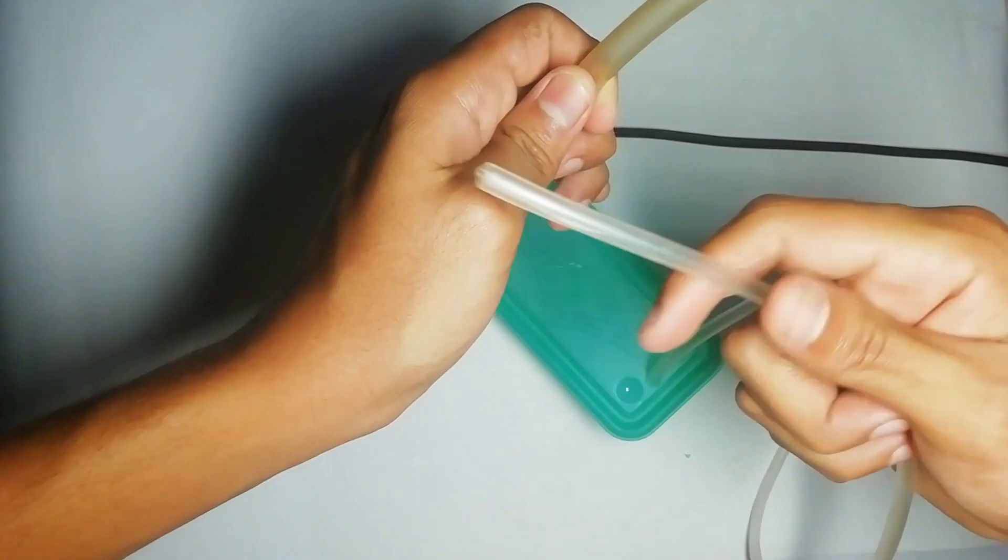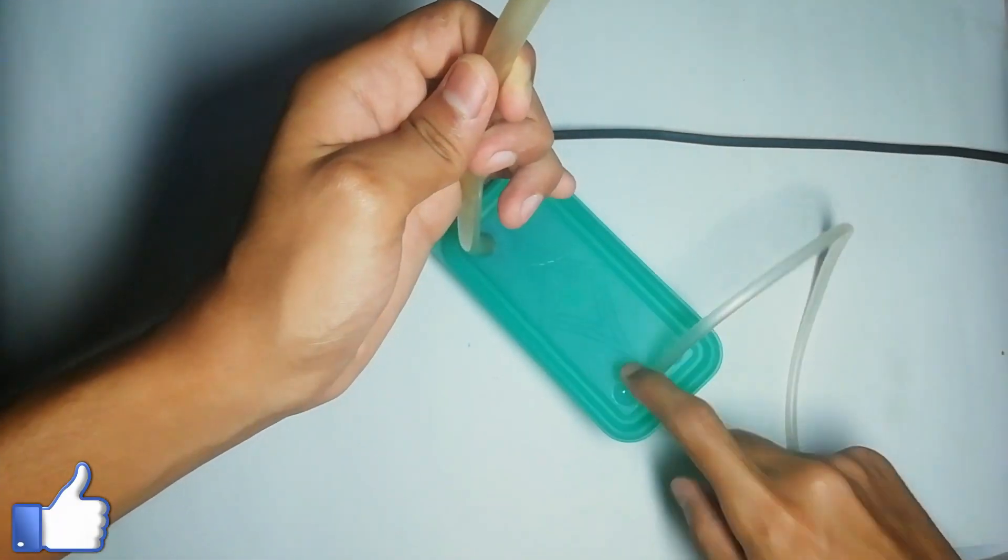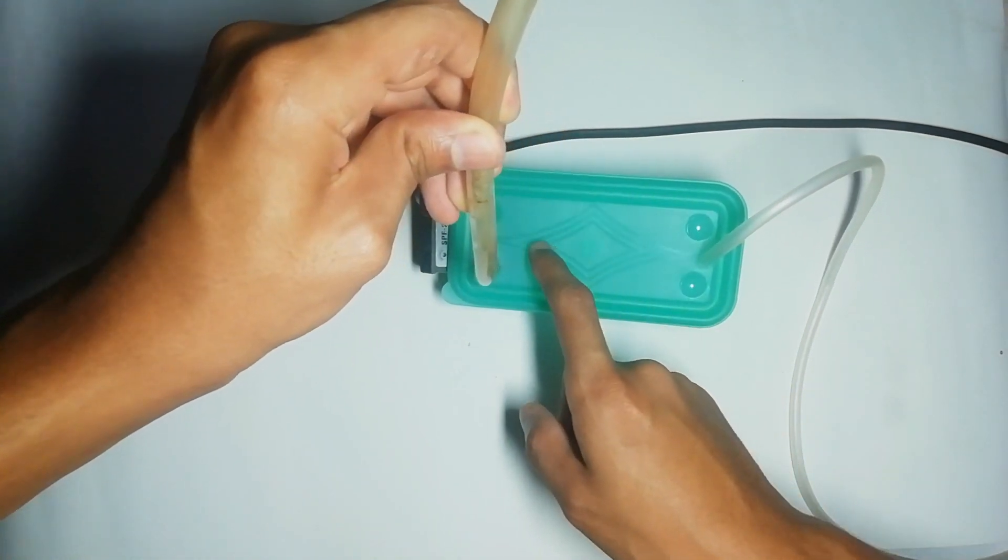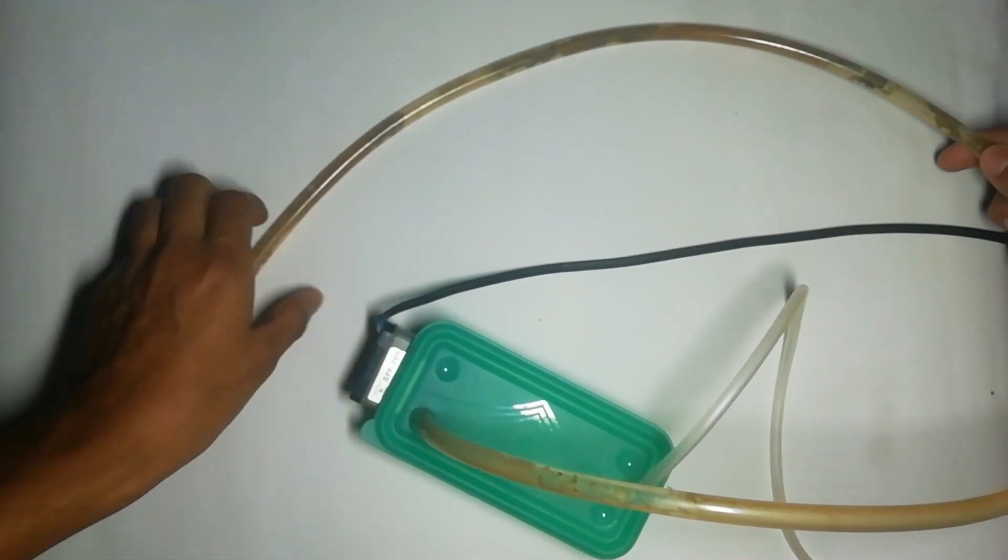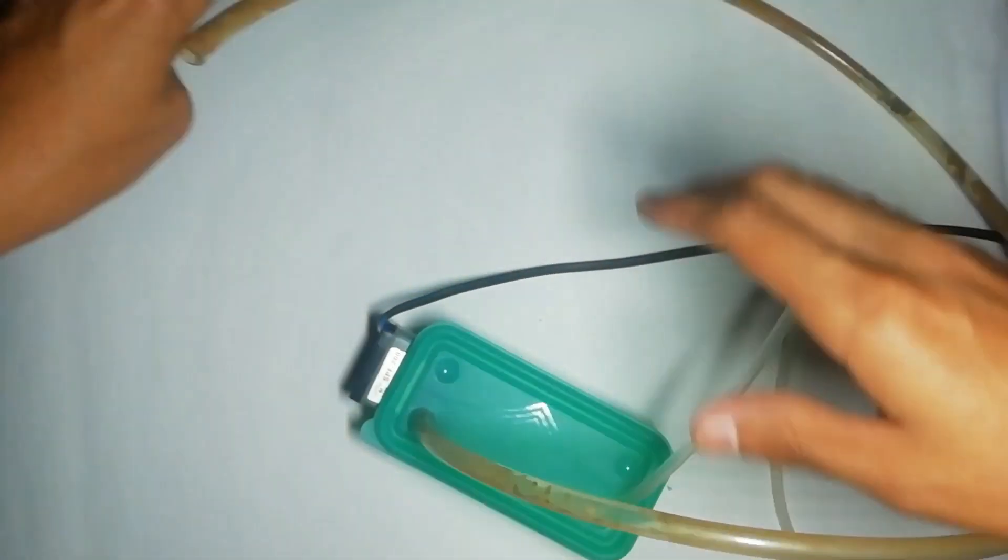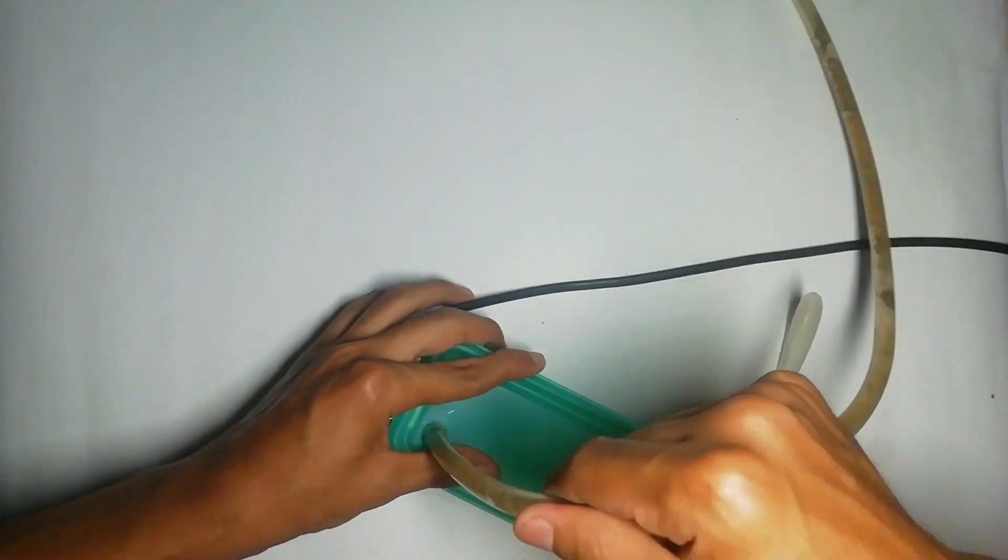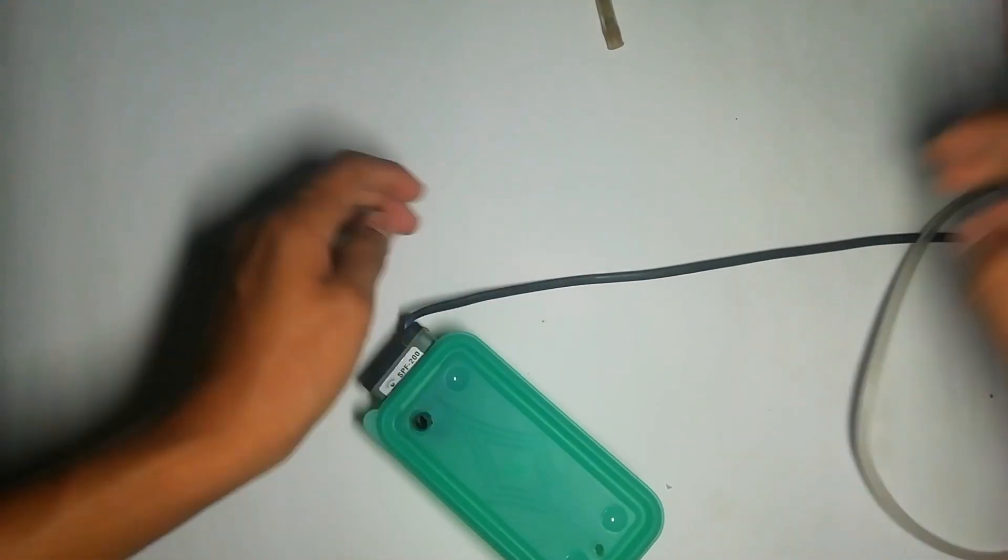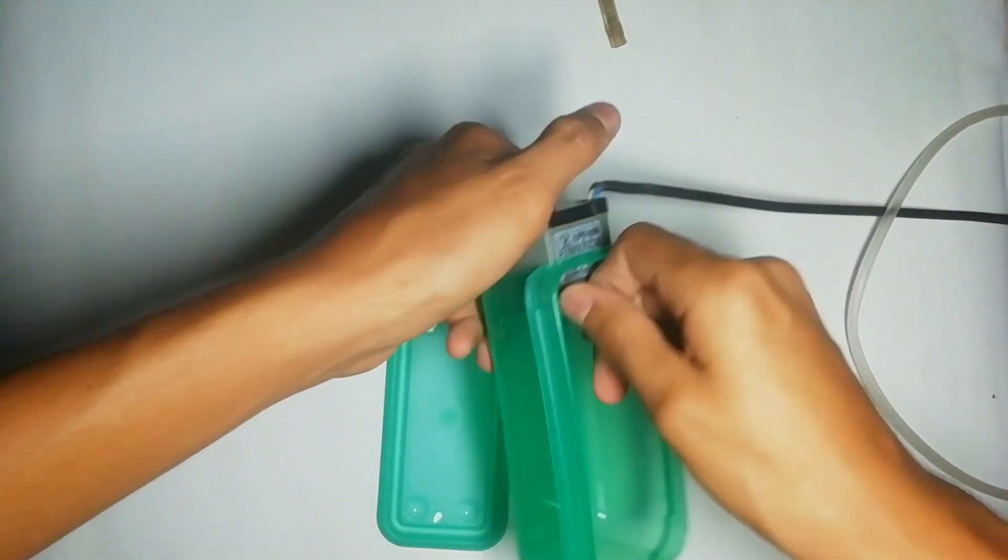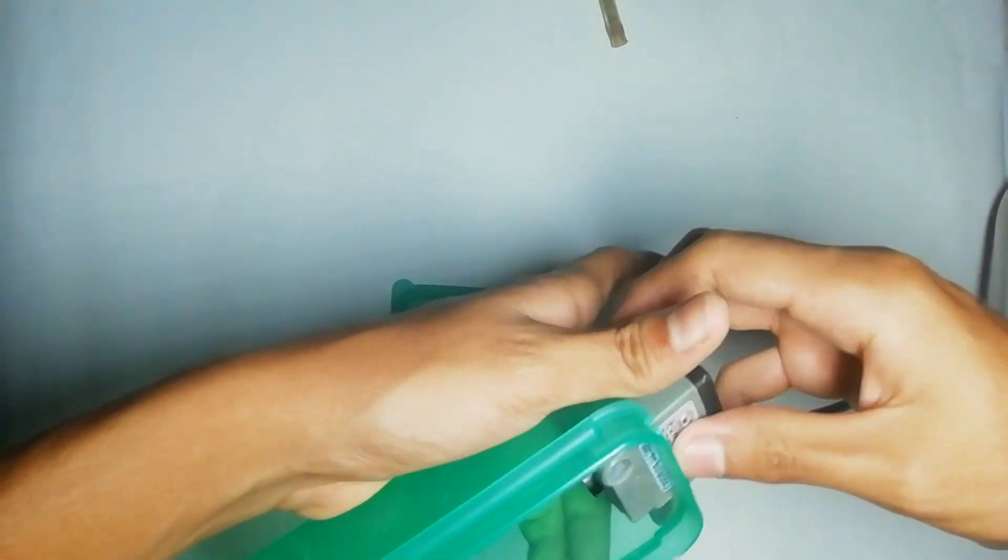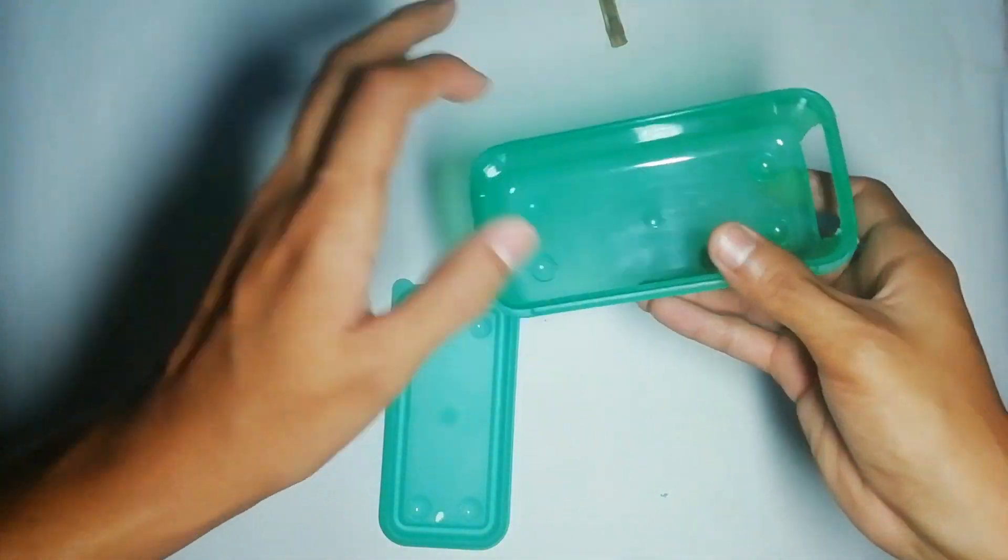Esta va a ser la entrada donde va todo el agua sucia que va a llegar al filtro. Va a pasar por aquí, el agua por el material filtrante, llega a la bomba. De aquí la vamos a pasar de nuevo directo al estanque ya al agua limpia. Así que bueno, ahorita les voy a enseñar cómo acomodar el material filtrante que pues no es muy difícil. Ya casi terminamos.